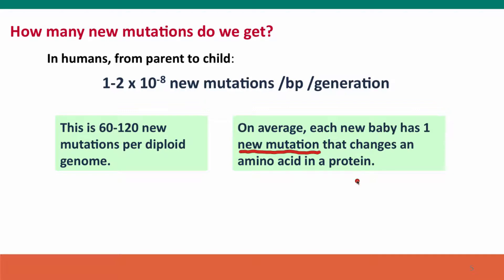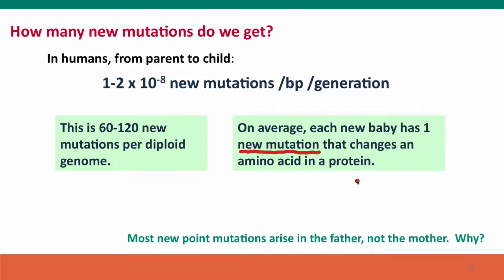So this means that we're constantly generating new genetic differences. Most of these new point mutations arise in the father, in the production of gametes by the father, not in the production of gametes by the mother — and we'll talk about why later, in lecture 2H.